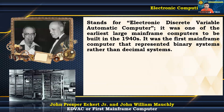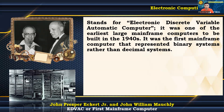EDVAC stands for Electronic Discrete Variable Automatic Computer. It was one of the earliest large mainframe computers built in the 1940s and the first mainframe computer to represent binary systems rather than decimal systems. It was a binary serial computer with 1,024-bit words of ultrasonic serial memory that could perform automated addition, subtraction, multiplication, division by programming, and checking. The typical addition and multiplication times for EDVAC were 864 and 2,900 microseconds, respectively.